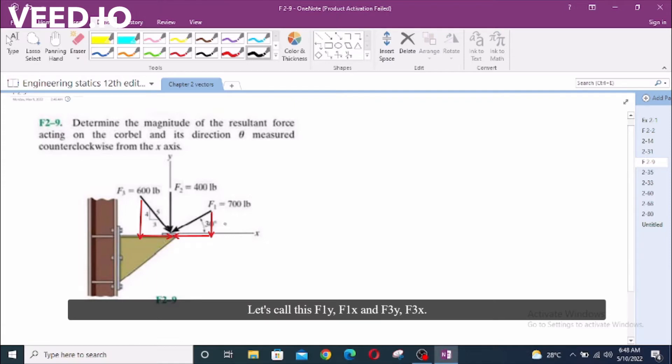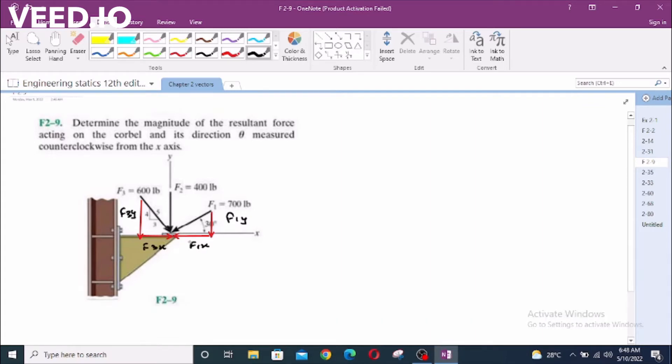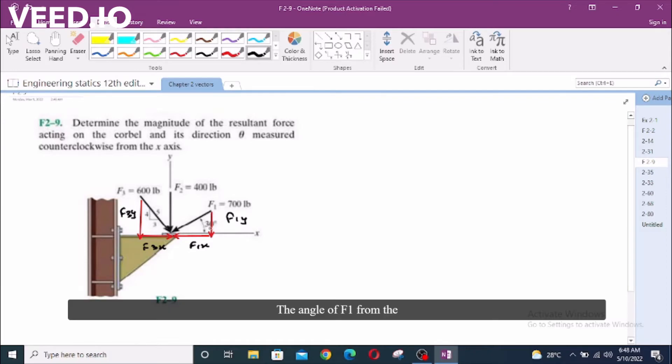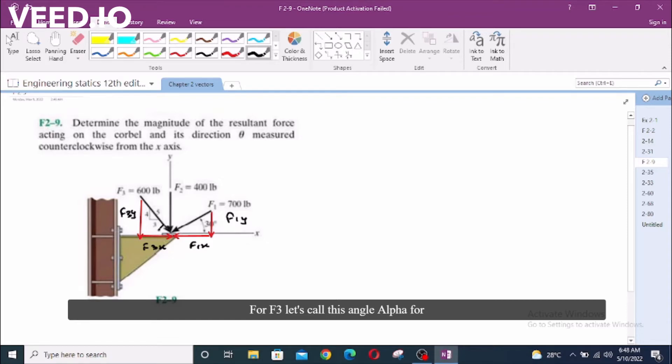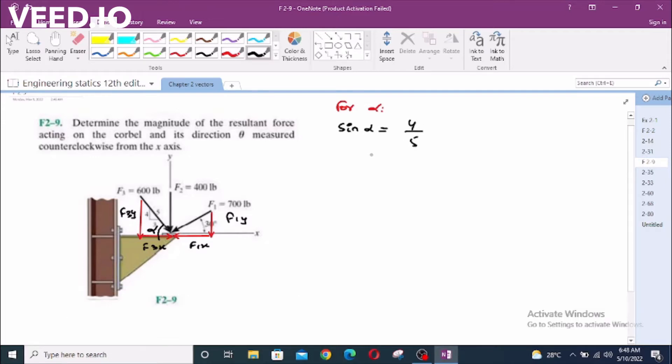Let's call this F1y, F1x, F3y, F3x. The angle of F1 from the horizontal is given which is 30 degrees. For F3 let's call this angle alpha. Sine of alpha equals 4 over 5, so alpha equals 53.13 degrees.